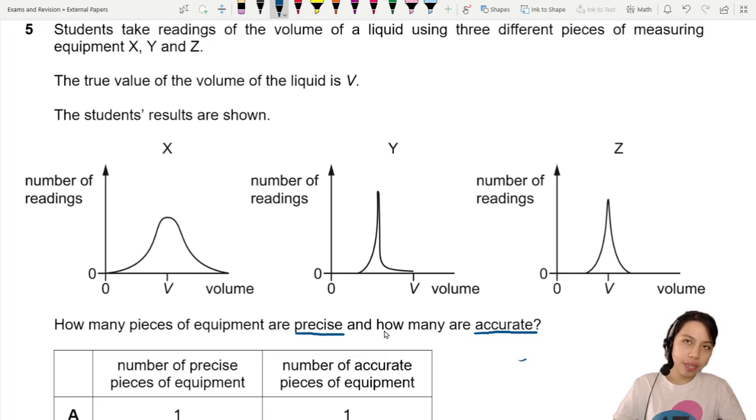Precise, you can consider it like there's less or very small scatter of data, small spread, small range, small uncertainty. That's two meanings of precision. This is one of it.